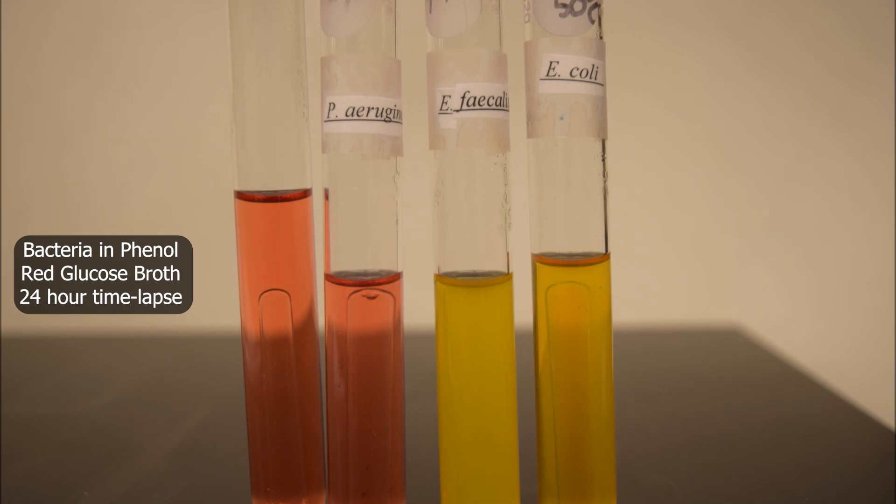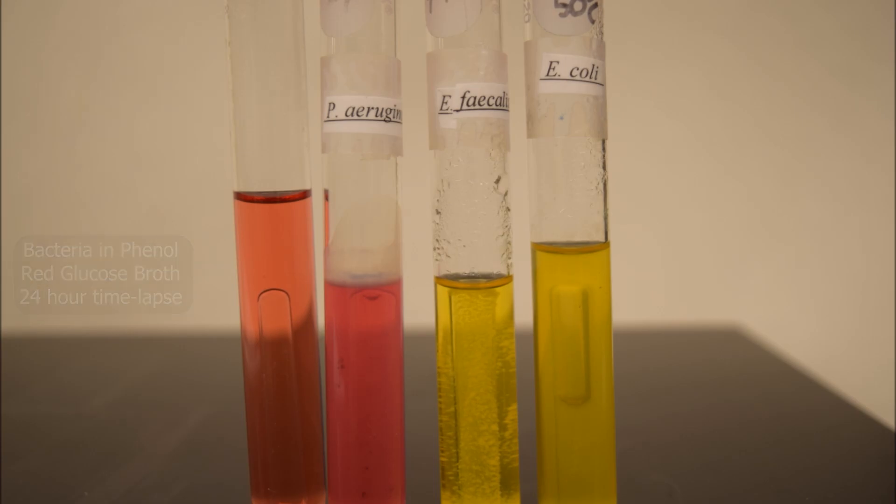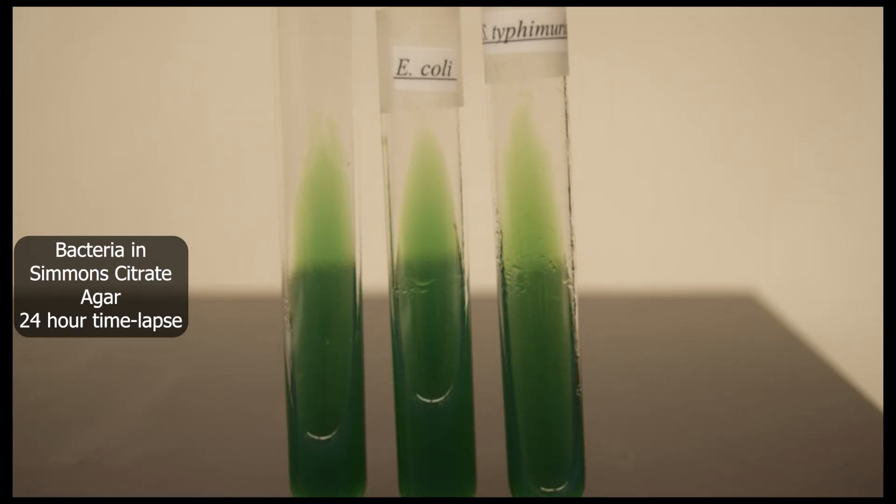You can see bacteria growing, producing gas and metabolites, and changing the pH of the media, which in turn changes the color of the media. That is because there are chemicals called pH indicators that will change colors when the pH changes.